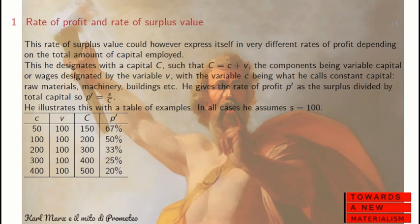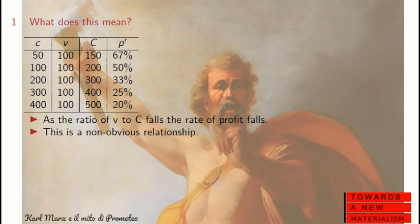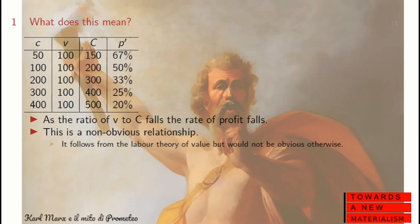He starts off with small c being 50 and gets a profit rate of 67%, then in steps increases the number for small c, and the profit rate gradually falls. This means that as the ratio of V to C falls, the rate of profit falls. If you haven't read Marx, this is a non-obvious relationship — it falls directly from the labour theory of value, but wouldn't be obvious otherwise.